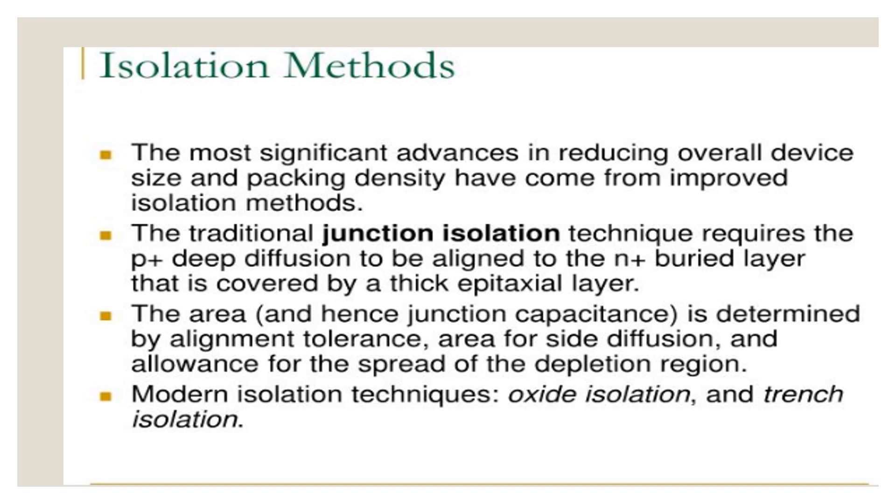The traditional junction isolation technique requires the heavily doped P deep diffusion to align to the heavily doped N plus buried layer that is covered by thick epitaxial layer and we will discuss about this in detail on the next slide. The area and junction capacitance is determined by alignment tolerance, area of side diffusion and allowance for the spread of depletion region. Modern isolation techniques involve oxide isolation and trench isolation.